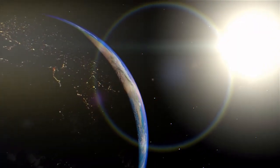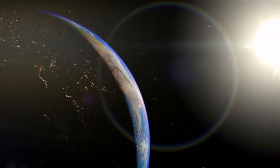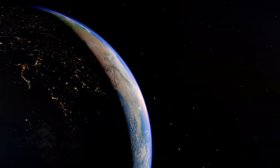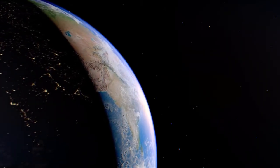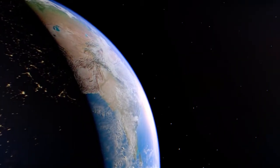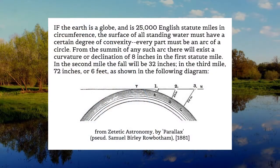We are told that the Earth is a sphere with a radius of 3,959 miles. Using this value, we can calculate the overall circumference, as well as the rate of geometric curvature decline relative to a standing observer.